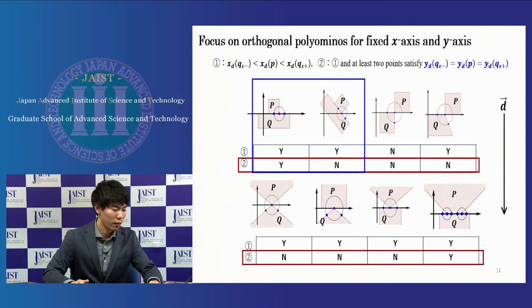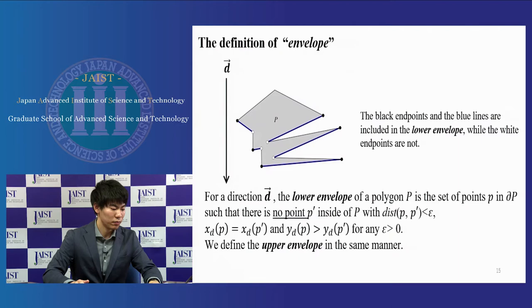We focus on orthogonal polyominoes for fixed x-axis and y-axis. So we also need to care about the value of y-axis. This is the definition of envelope. This is defined for direction D. The black end point and the blue lines are included in the lower envelope, while the white end points are not. We define the upper envelope in the same manner.